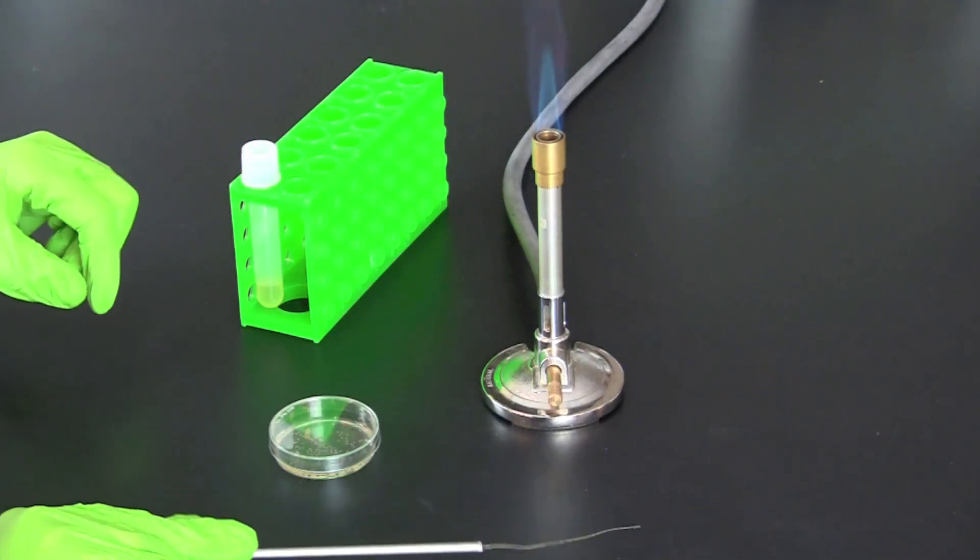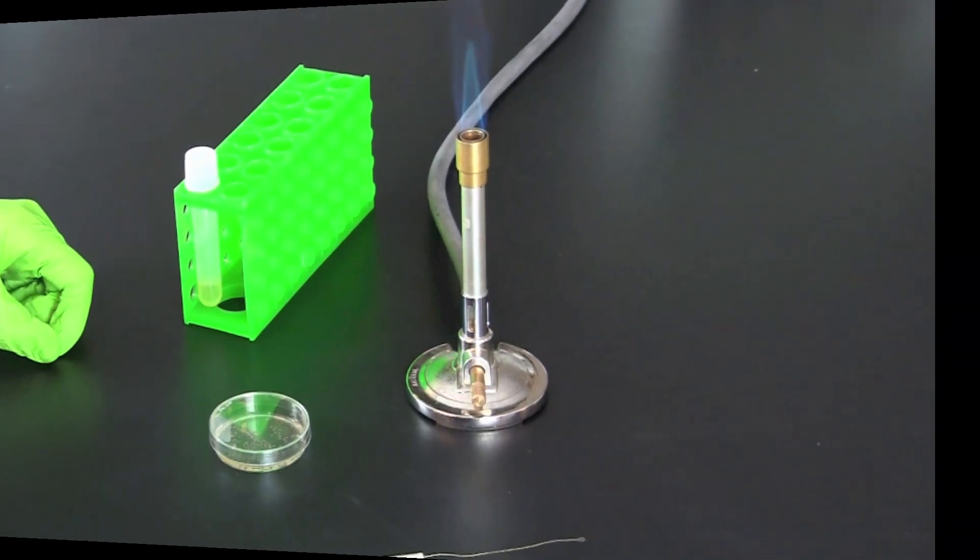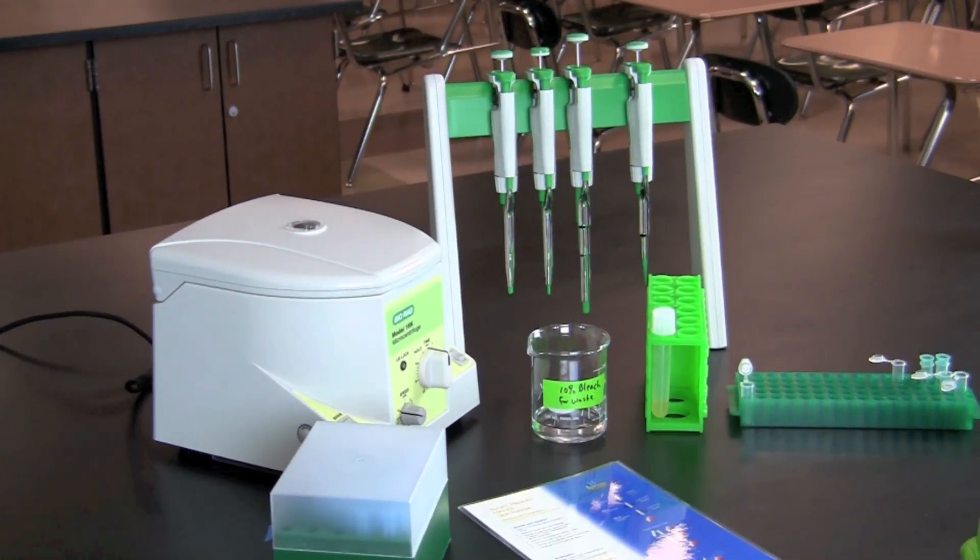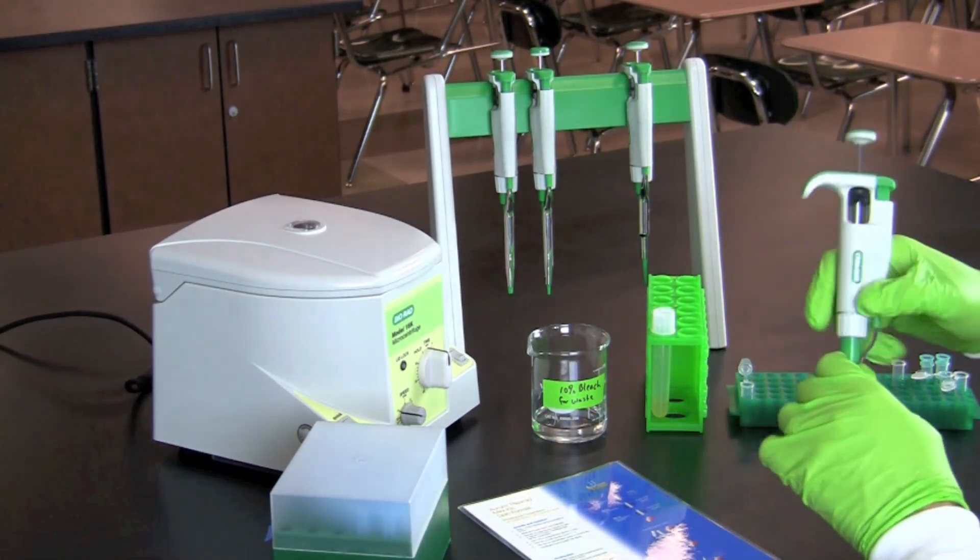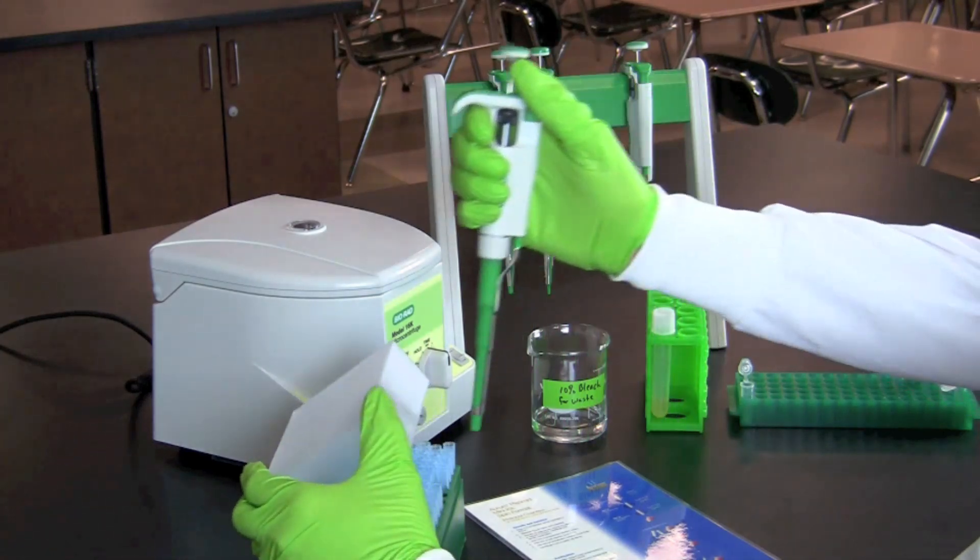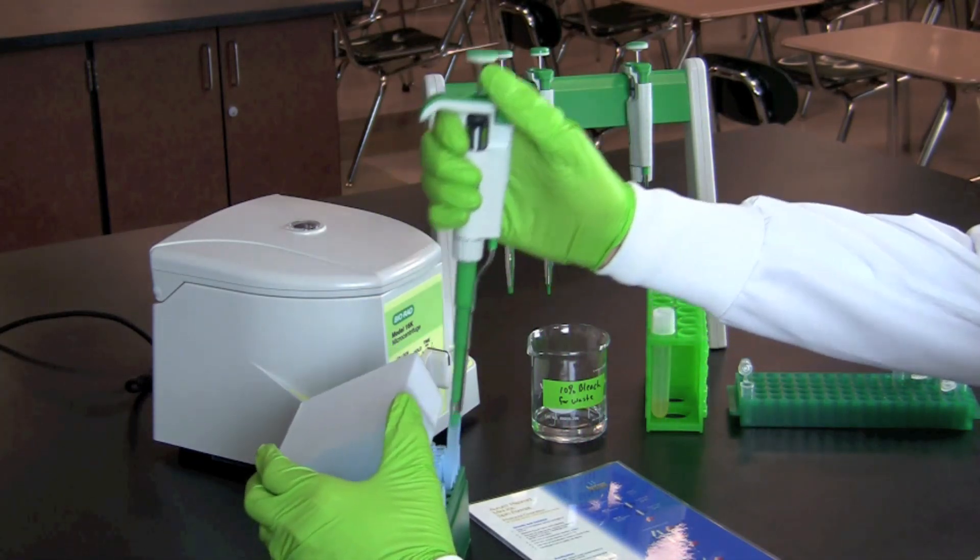Place the culture tube in a shaking incubator, shaking water bath, or tube roller in an incubator. Grow the culture overnight at 37 degrees Celsius. After an overnight incubation, the culture should appear cloudy.